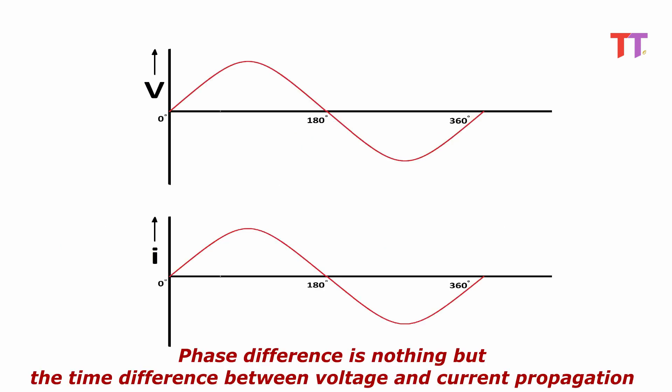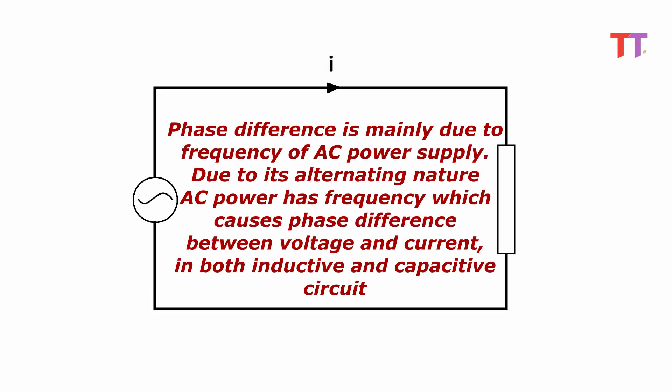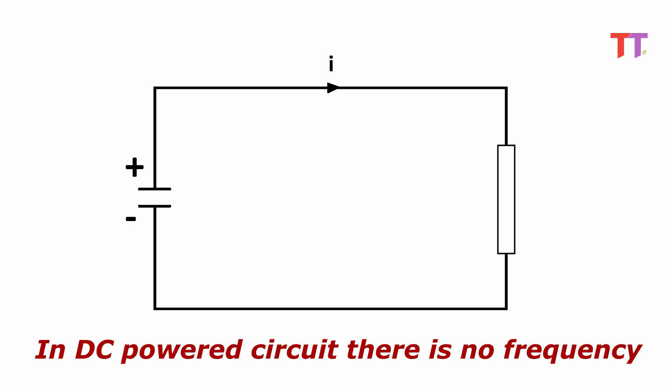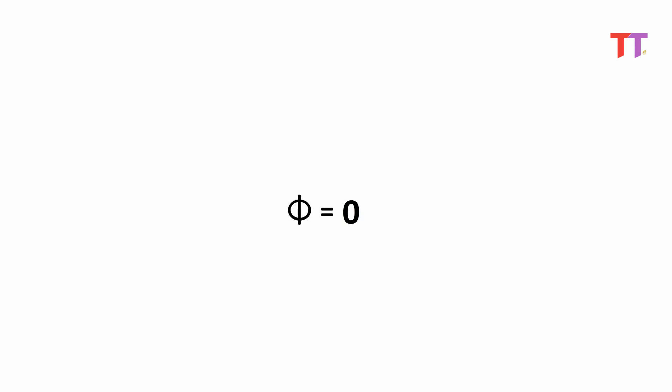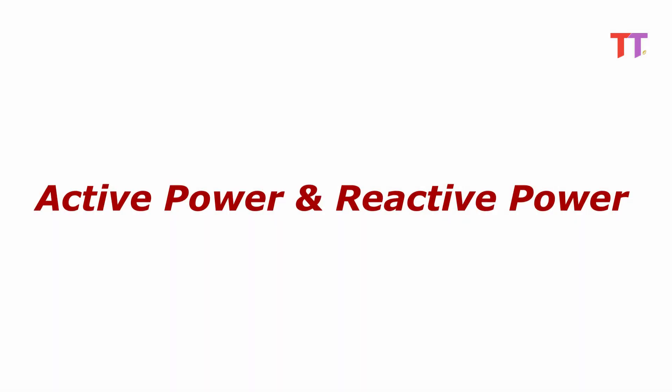Now let's see why there is phase difference between voltage and current in AC power. As we know, phase difference is the time difference between voltage and current propagation. Phase difference is mainly due to the frequency of AC power supply. Due to its alternating nature, AC power has frequency which causes phase difference between voltage and current in both inductive and capacitive circuits. In DC power circuits there is no frequency, hence no phase difference between voltage and current, and hence power factor is unity.